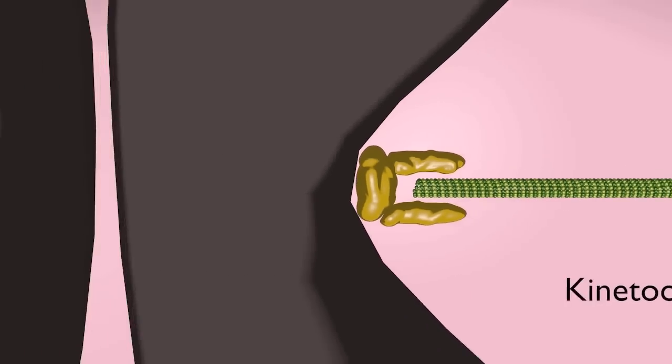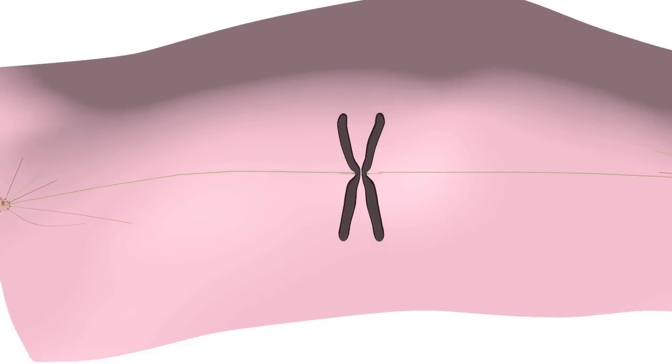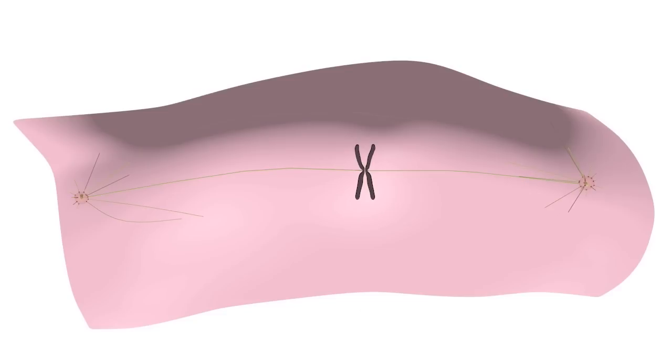Kinetochores are large, multi-protein complexes that assemble on each sister chromatid at a site called the centromere. The way microtubules attach to kinetochores is important. Kinetochores of sister chromatids need to attach to microtubules that emanate from opposite poles of the spindle, namely from different centrosomes.